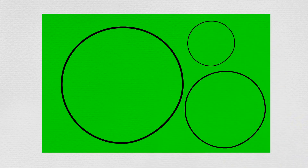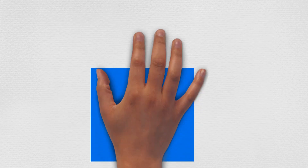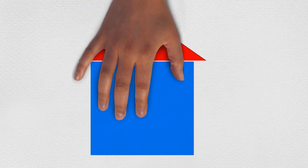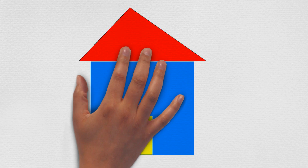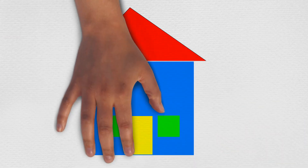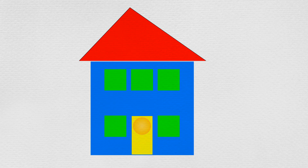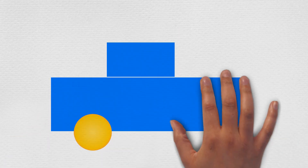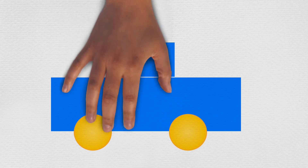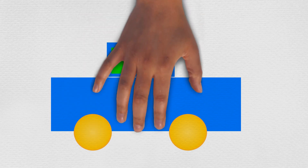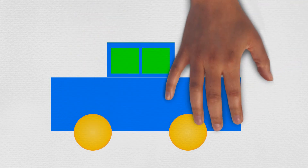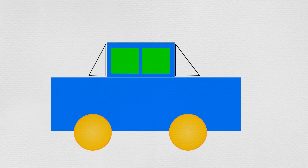Min picked up some of the shapes and put them together to make a house. Max put together some more shapes and made a car: two rectangles, two circles, two squares and two triangles.